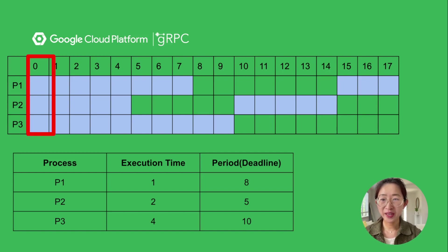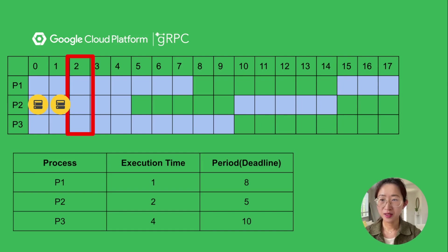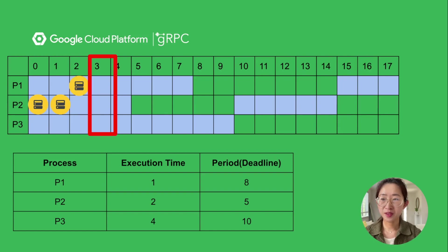At time 0, we pick the earliest deadline item to process, which is P2. It takes two time slices to finish. After P2 is finished, its next deadline is at time block 9. Now at time slice 2, we schedule P1 because this is earliest right now. It takes one time slice to finish. At time 3, because P2 and P3 have the same deadline, we pick P3 as it's earliest in the queue, and we spend four time slices, and so on and so forth.